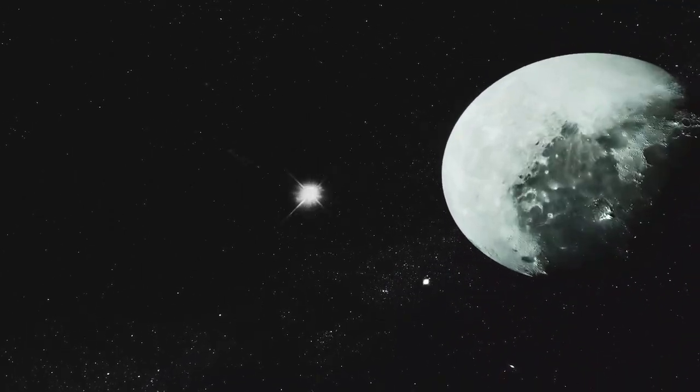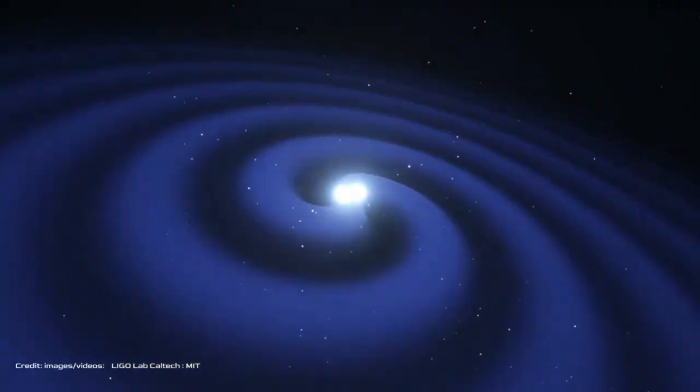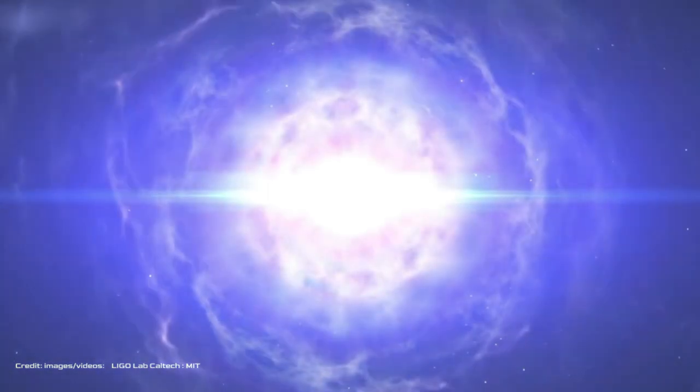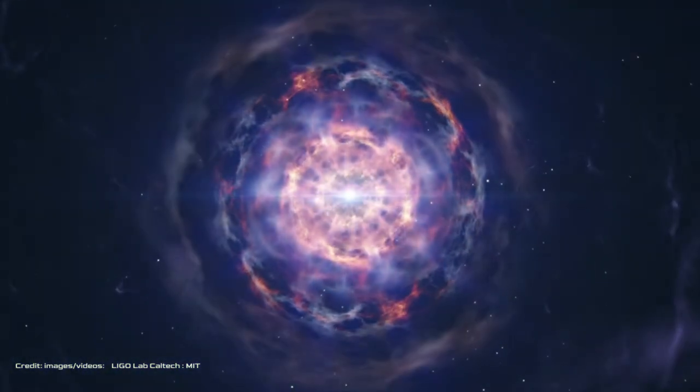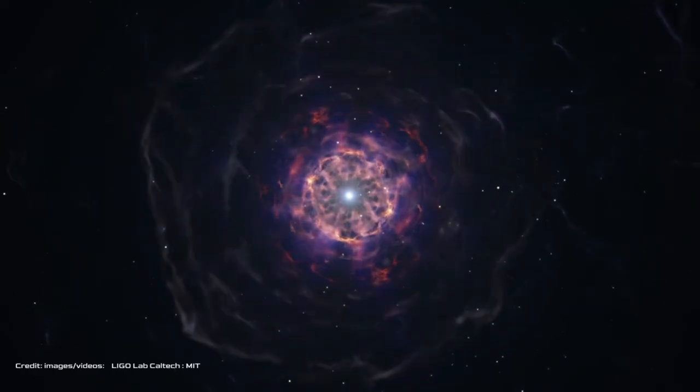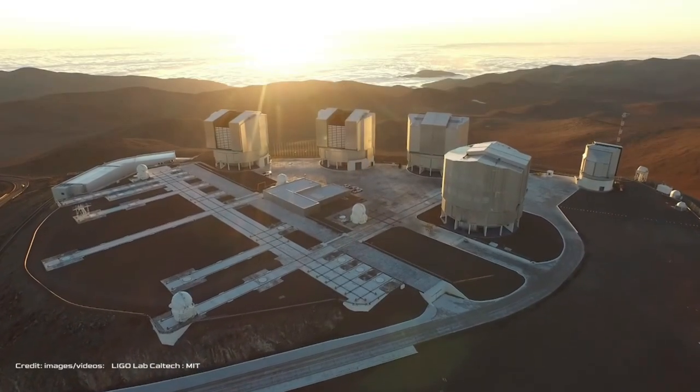But how can we travel in time? One of the most promising candidates is gravitational waves, which are ripples in space-time that are generated by accelerating massive objects, such as colliding black holes or neutron stars. Gravitational waves are like wrinkles in space-time that happen when massive objects move really fast. They carry energy away from the source, and they travel at the speed of light.